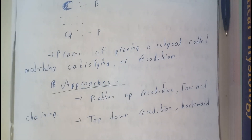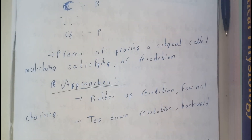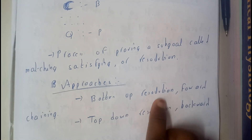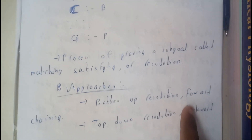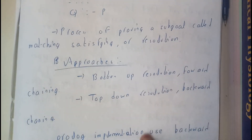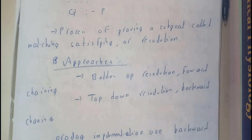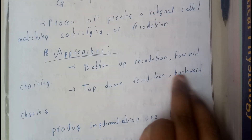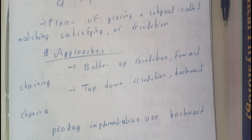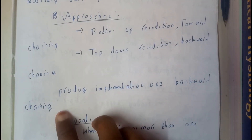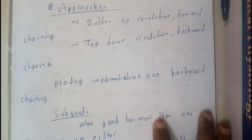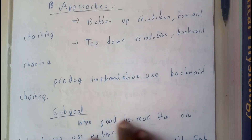Now let us go through types of approaches in Prolog. There is bottom-up resolution, that is forward chaining, and there is also top-down resolution, that is backward chaining. Prolog follows backward chaining — Prolog implements the use of backward chaining.